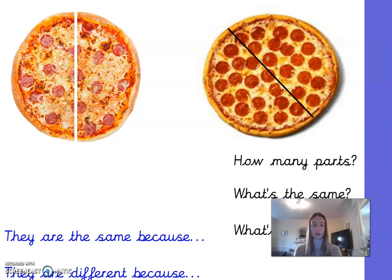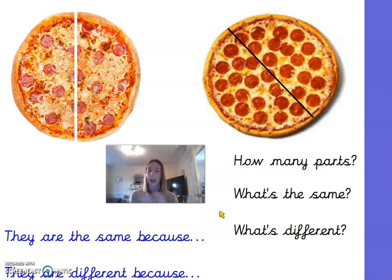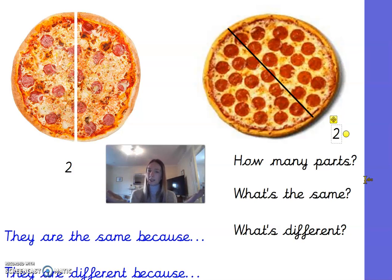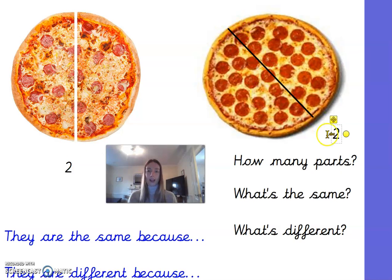Now we have some pictures of pizza. How many parts does each pizza have and what is the same and what is different? This pizza has two equal parts, and this pizza also has two equal parts — so they are the same in that both have two equal parts. But they are different because they have been split differently: one pizza has a vertical line and the other has been split diagonally.